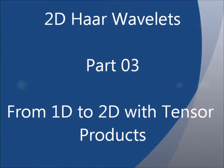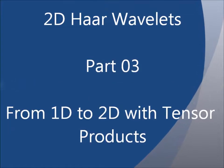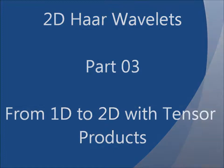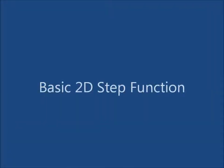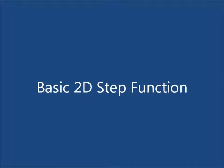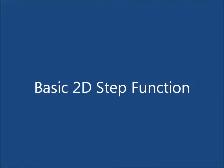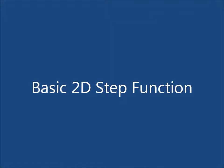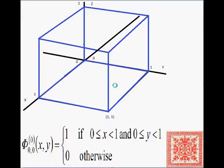This is part three in our series on two-dimensional Haar wavelets. In this series we're going to talk about how to use tensor products to transition from one-dimensional space to two-dimensional space.